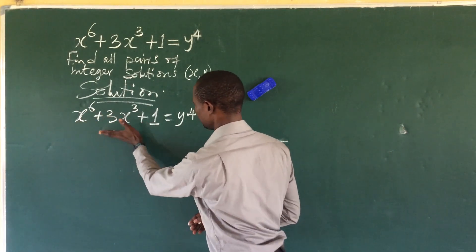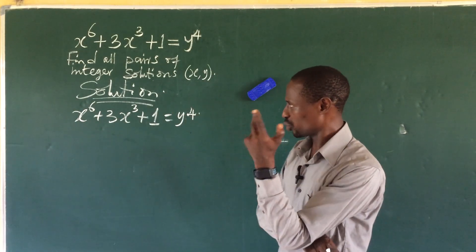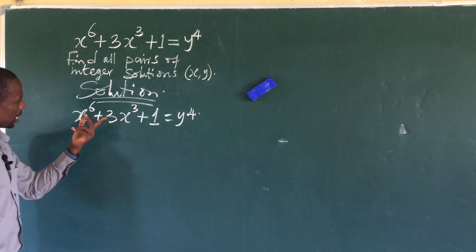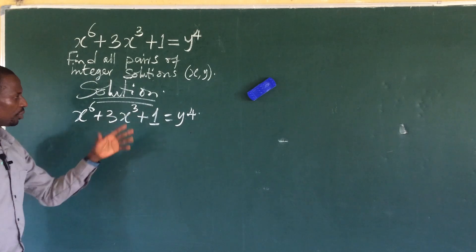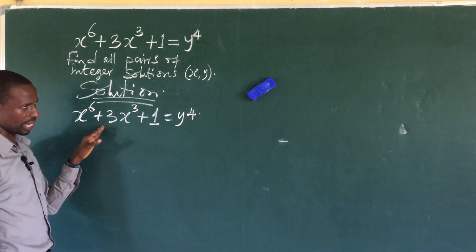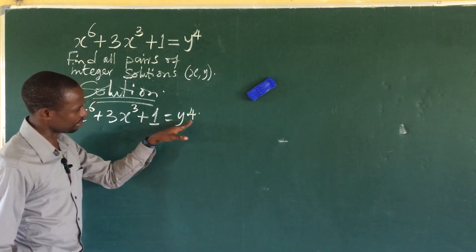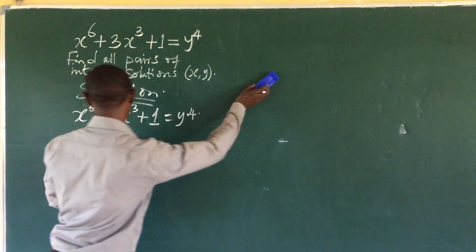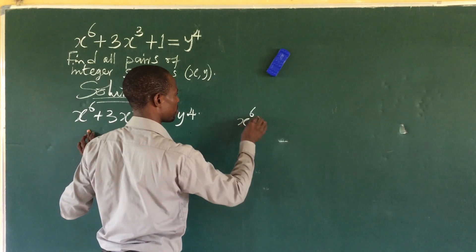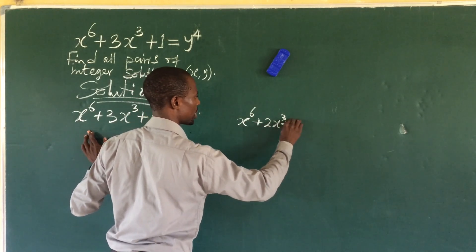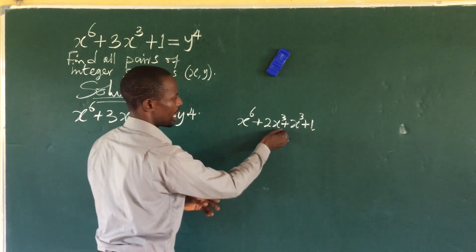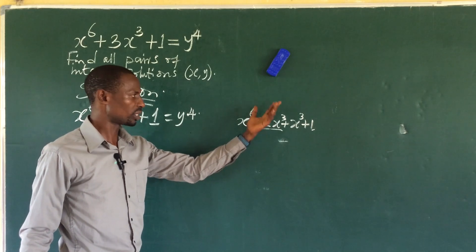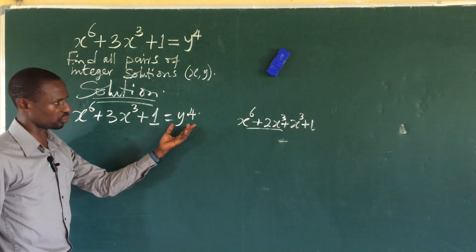Looking at what we have here, I thought of using the sum of two cubes, but that didn't work out. However, if you rewrite the expression in terms of 2x³, you can get a very nice algebraic identity. We can rewrite this as: x⁶ plus 2x³ plus x³ plus 1. Taking the first two terms and the last two terms together gives very nice expressions that relate to powers of two.